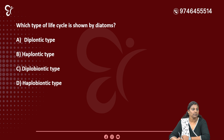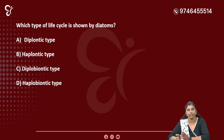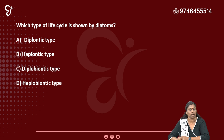Which type of life cycle is shown by diatoms? Option A: Diplontic type. Option B: Haplontic type. Option C: Diplobiontic type. Option D: Haplobiontic type. The correct answer for diatoms is Diplontic type — Option A.